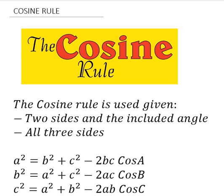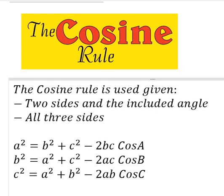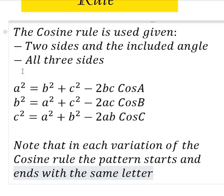Looking at what we have on the screen, we have: a² = b² + c² − 2bc·cos A, that is when A is your known angle. Or it can be b² = a² + c² − 2ac·cos B. You will discover there is a trend. Or we can have c² = a² + b² − 2ab·cos C.